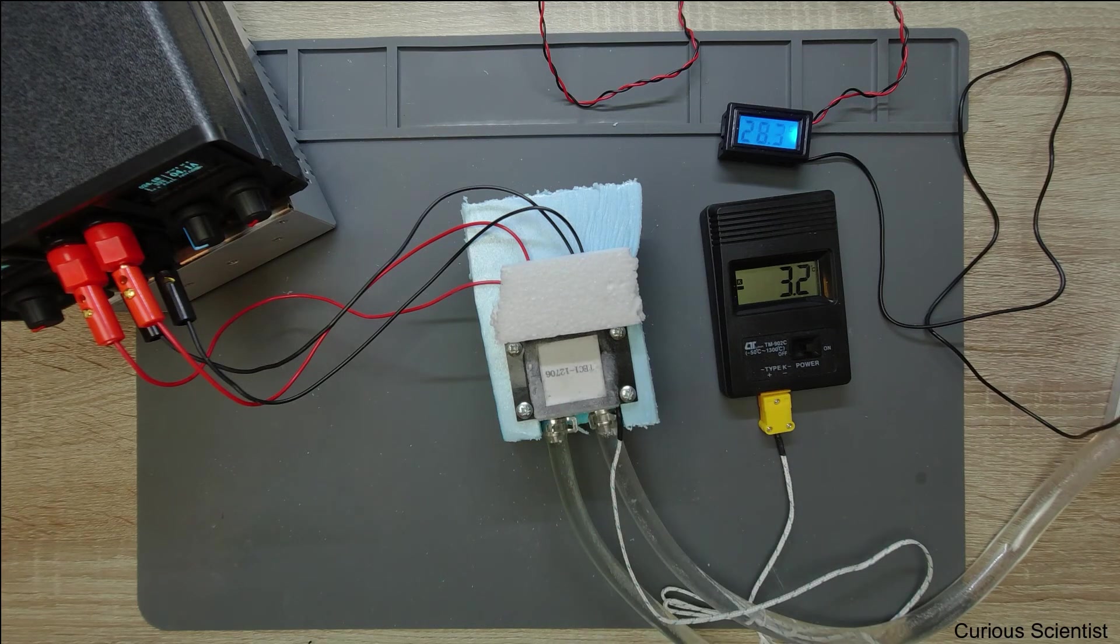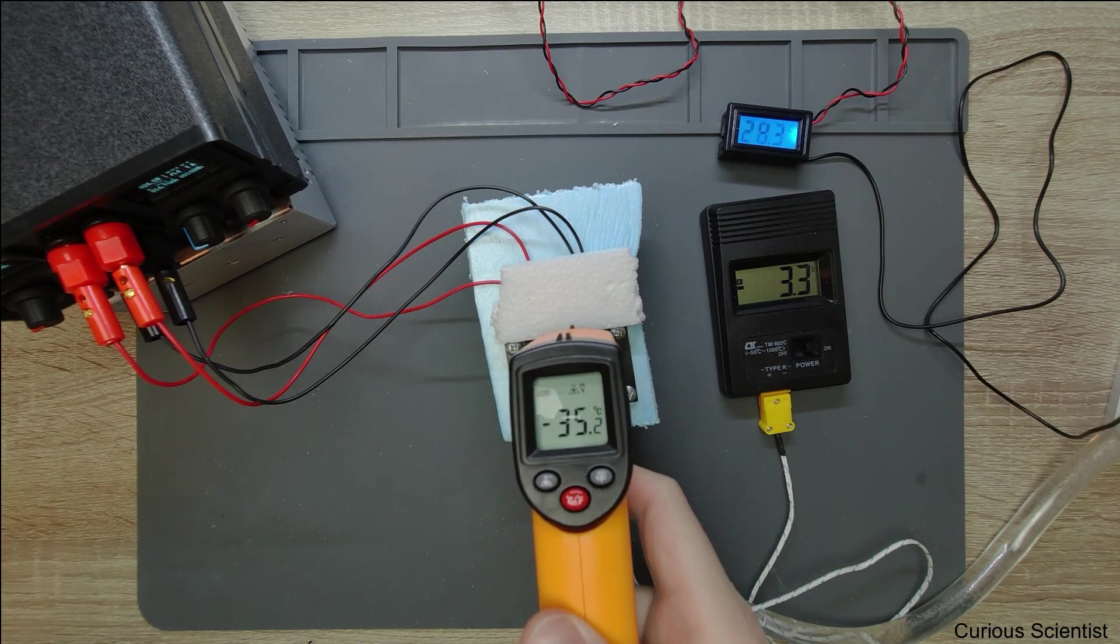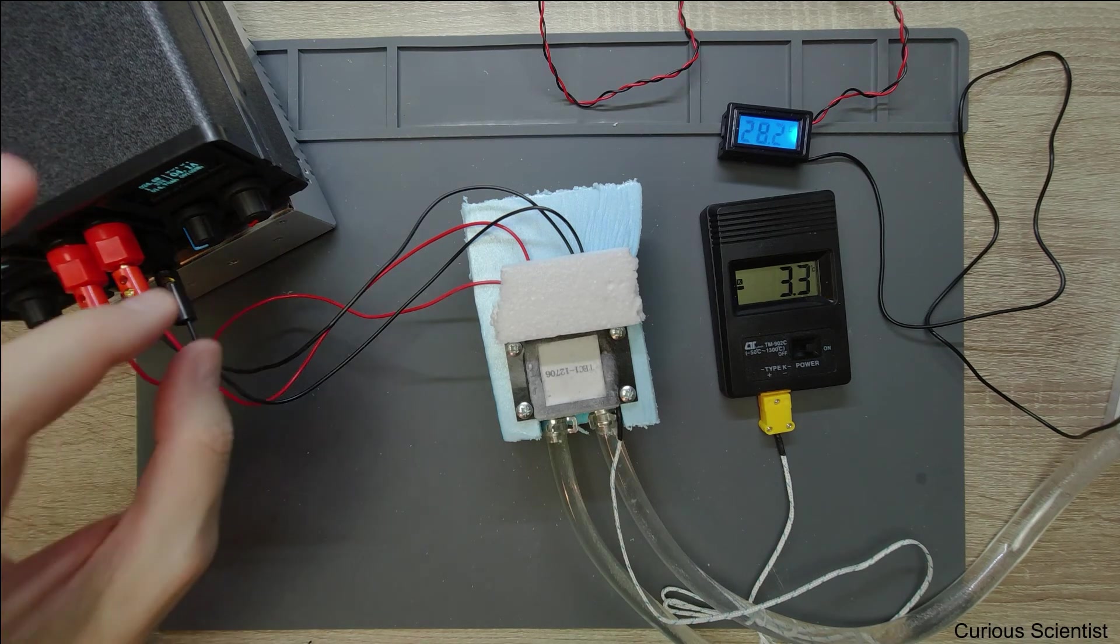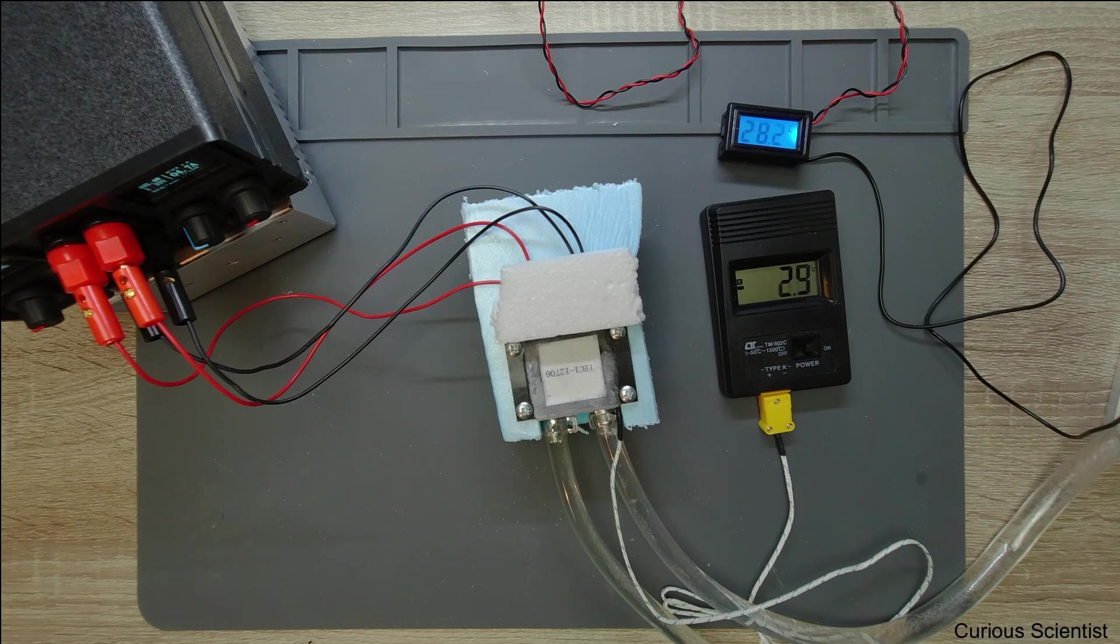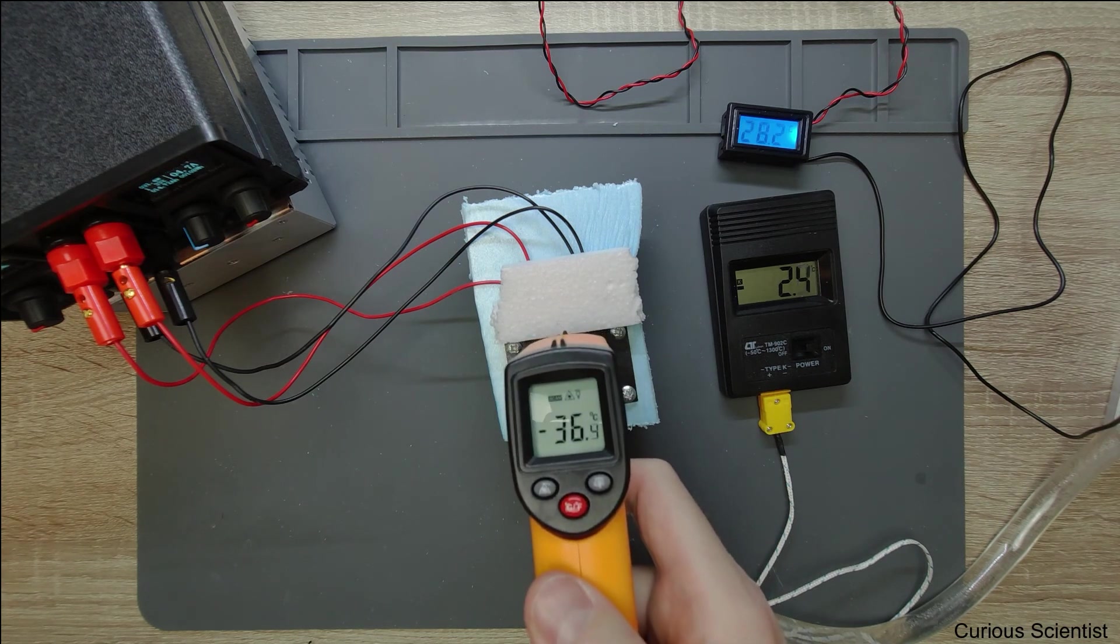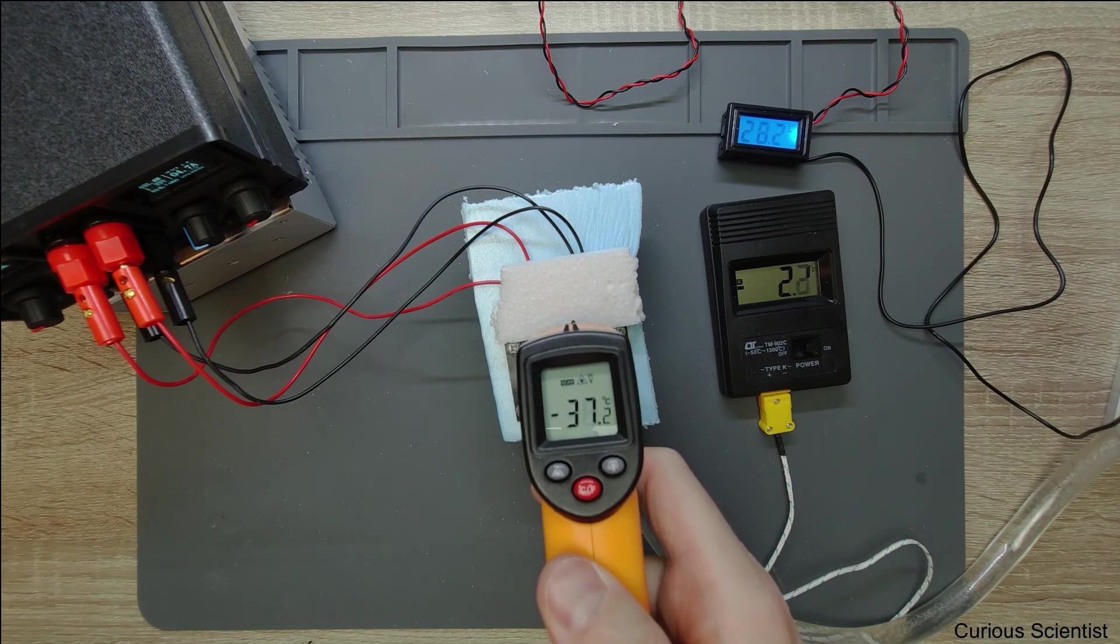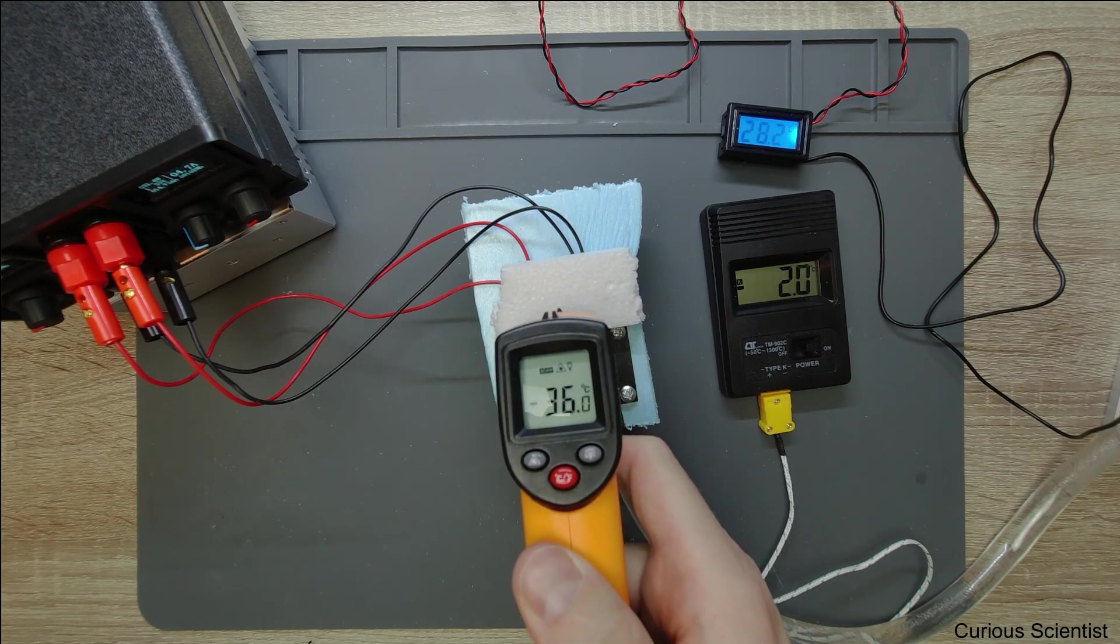Here we have minus 35. When the water was colder and I had another setting for the current, I was able to reach better temperature on the surface. But I would say minus 35 to minus 37 is also quite okay. It depends.